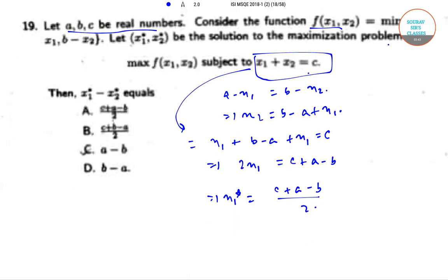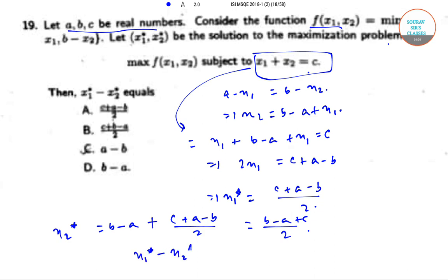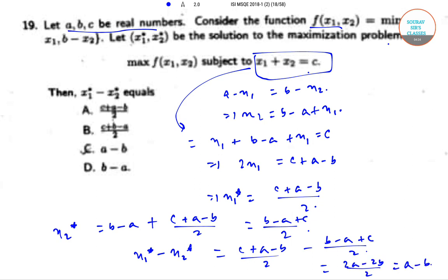And x2* equals b minus a plus (c plus a minus b) divided by 2, which equals (b minus a plus c) divided by 2. Therefore x1* minus x2* equals (c plus a minus b)/2 minus (b minus a plus c)/2, which equals (2a minus 2b)/2, equal to a minus b. So the correct option is option C.